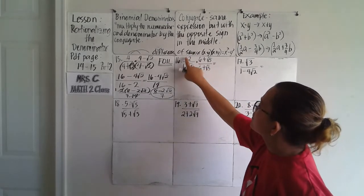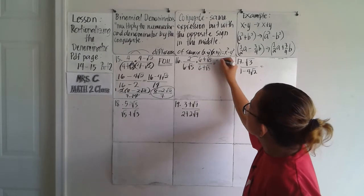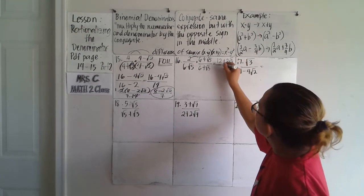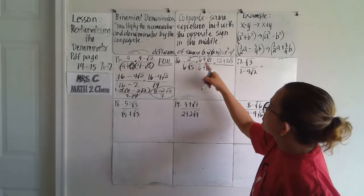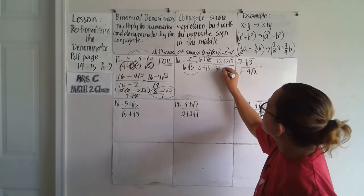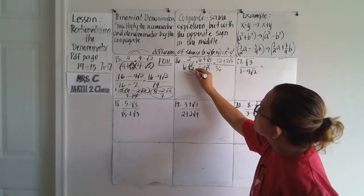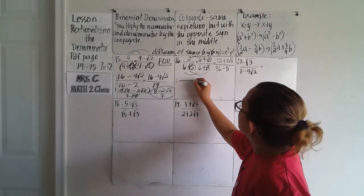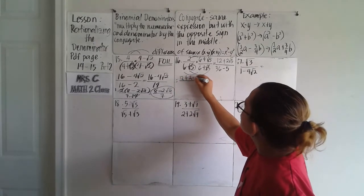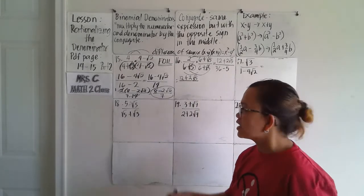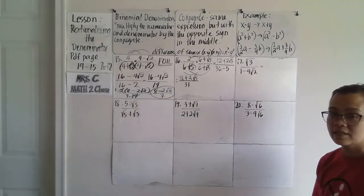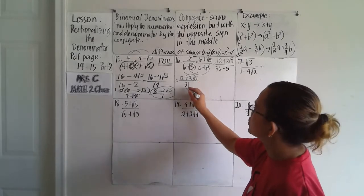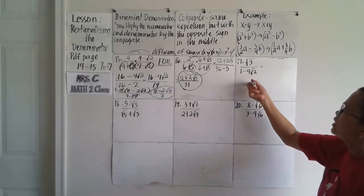The numerator is a binomial times a monomial, so distribute: two times six is twelve, and two times square root of five is two square root of five. For the denominator using difference of squares: six times six is 36, and square root of five times square root of five cancels to give five, so we have 36 minus five which is 31. The final answer is twelve plus two square root of five over 31 — we cannot simplify further since 12 and 2 are not both divisible by 31.